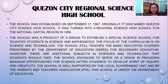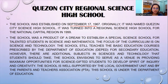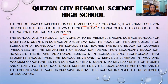Next, we have the Quezon City Regional Science High School. The school was established on September 17, 1967. Originally, it was named Quezon City Science High School. It was turned into a regional science high school for the National Capital Region in 1999. The school was a product of a dream to establish a special science school for talented students in science and mathematics. The focus of the curriculum is on science and technology, and the school still teaches the basic education courses prescribed by DepEd for secondary education.